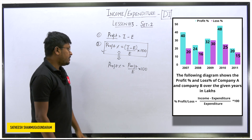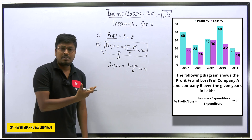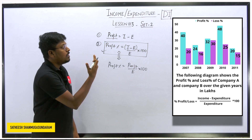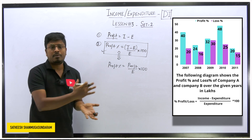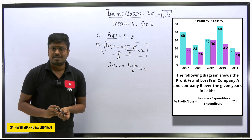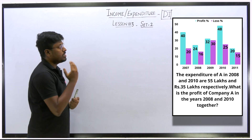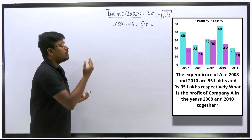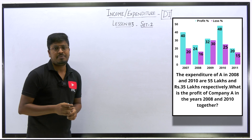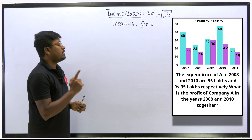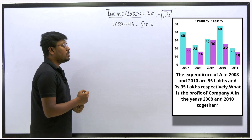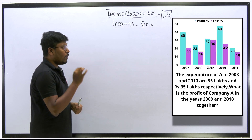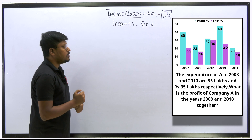Now let's start solving the questions. Three to four questions are enough to understand the concepts based on income expenditure data interpretation by only giving profit percentage and loss percentage. Question number one: look at the chart carefully for two companies A and B, where profit percentage and loss percentage are given. The expenditure of company A in 2008 and 2010 are 55 lakh and 35 lakh respectively. What is the profit of company A in the year 2008 and 2010?